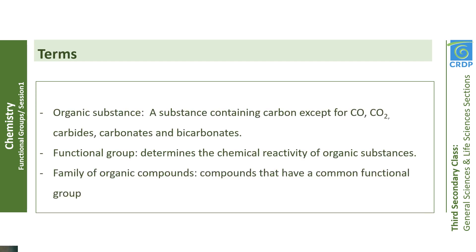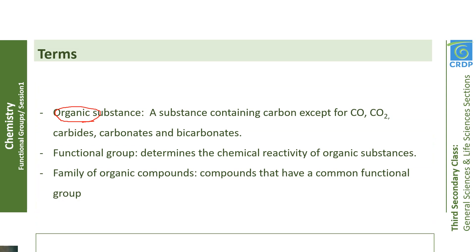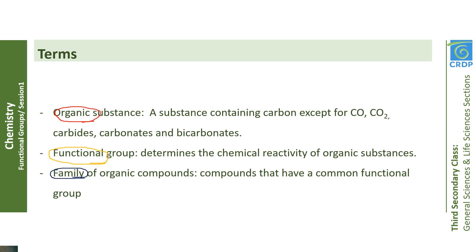Let's review some terms. What's an organic substance? It's a substance containing carbon, except for carbon monoxide, carbon dioxide, carbides, carbonates, and bicarbonates. What's a functional group? It's the part that determines the reactivity of organic substances. And what's a family of organic compounds? These are the compounds that have a common functional group.